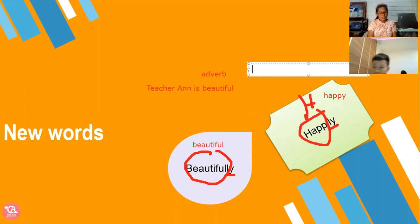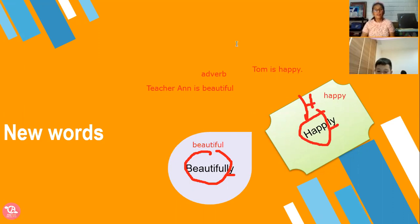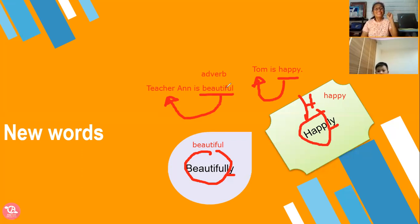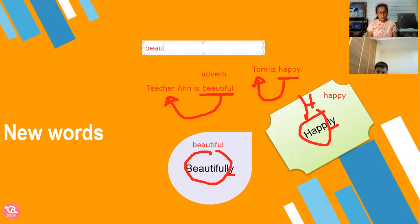Look at this one — Tom is happy. Teacher Ann is beautiful. Happy — this is adjective. Beautiful — this is adjective. Beautiful describes teacher Ann. Happy describes Tom. This is only adjective, not adverb yet. Beautiful and happy are adjectives.